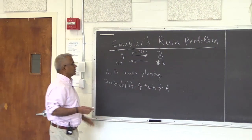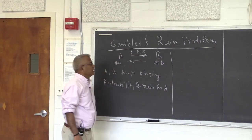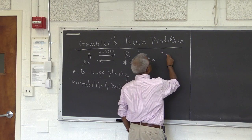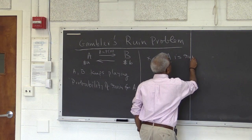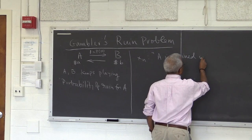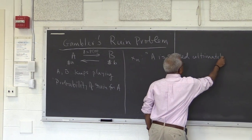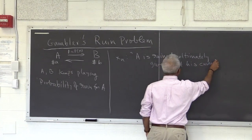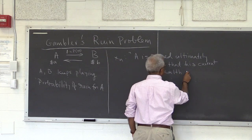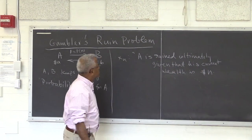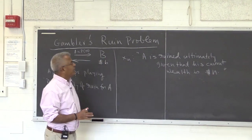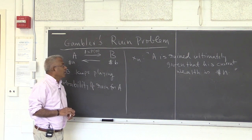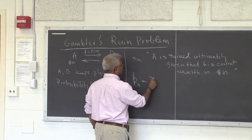This is a classic problem. I'm going to define an event Xn: A is ruined eventually or ultimately, given that his current wealth is dollar-n. So at some point A has n dollars in his pocket and they keep playing. We define Pn to be the probability of Xn. What we are interested in is the probability for A — I'll use uppercase — this is Pn.